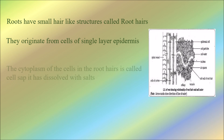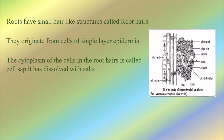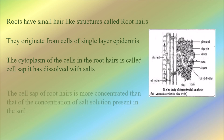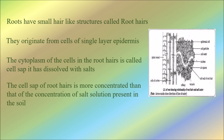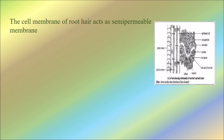The cytoplasm of the cells in the root hairs is called cell sap, and it has dissolved salts in it. The cell sap of root hairs is more concentrated than the concentration of the salt solution present in the soil.